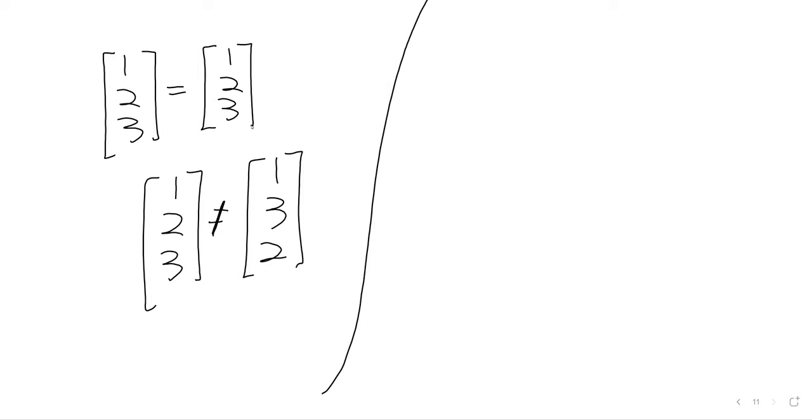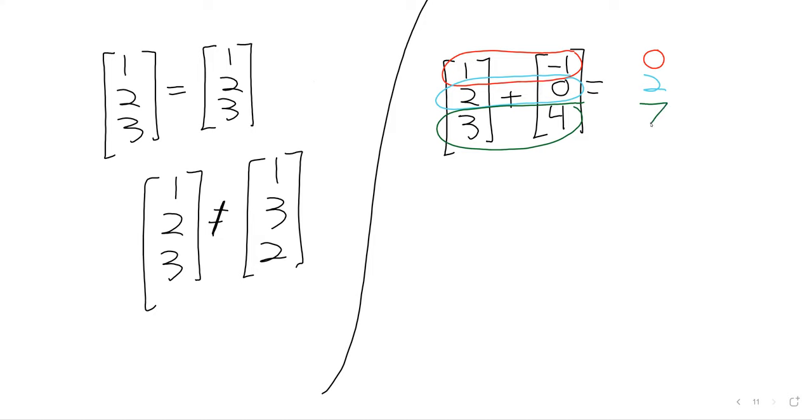We can add vectors to one another as long as they're the same size, the same dimension. And addition is done component-wise, which is just a fancy way of saying first we add the first numbers, then we add the second numbers, then we add the third numbers.